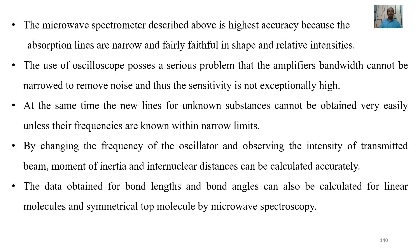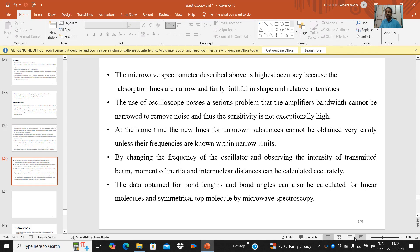The pattern obtained on the chart or oscilloscope screen enables one to determine the frequency or range of frequencies of the detected microwave radiation. The microwave spectrometer described above is of the highest accuracy because the absorption lines are narrow and fairly faithful in shape and relative intensities. The use of an oscilloscope presents a problem in that the amplifier's bandwidth cannot be narrowed enough to remove noise, so sensitivity is not exceptionally high. New lines for unknown substances cannot be obtained very easily unless the frequencies are known within narrow limits. By changing the frequency of the oscillator and observing the intensity of the transmitted beam, moment of inertia and internuclear distances can be calculated accurately. The data obtained for bond lengths and bond angles can also be calculated for linear molecules and symmetrical top molecules by microwave spectroscopy.